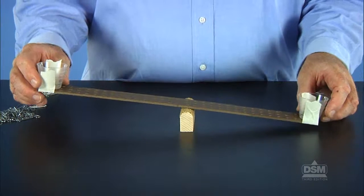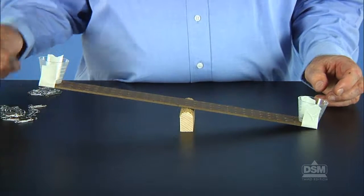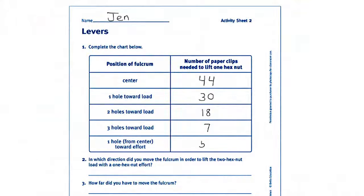Encourage them to repeat the experiment several more times, moving the fulcrum first one hole, then two, and then three holes closer to the load. Finally, tell students to repeat the experiment by moving the fulcrum one hole from center toward the effort. Remind students to record their observations on the Activity Sheet.